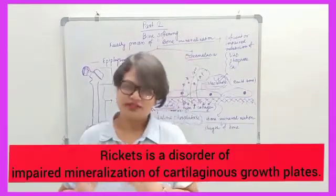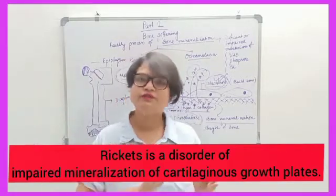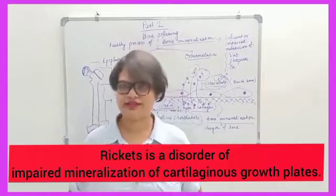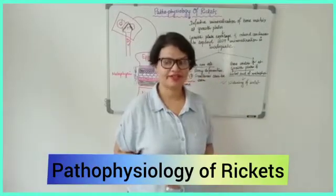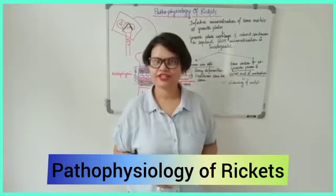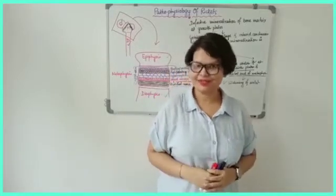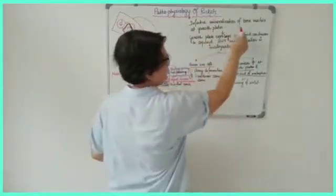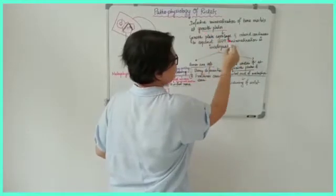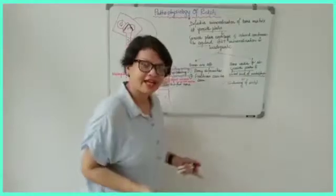Rickets is a disorder of impaired mineralization of cartilaginous growth plates. For the pathophysiology of rickets, we know that rickets is a disorder of inadequate mineralization of the growing long bones at cartilaginous growth plates. There is defective mineralization of the bone matrix at growth plates. Growth plate cartilage and osteoid continue to expand, but mineralization is inadequate.